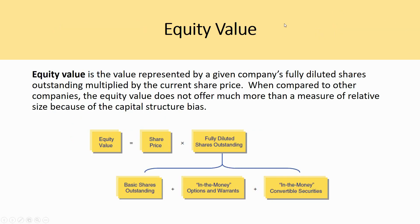Equity value is the value represented by a given company's fully diluted shares outstanding multiplied by the current share price. When compared to other companies, equity value does not offer much more than a measure of relative size because of the capital structure bias. So equity value equals share price times fully diluted shares. Importantly, it's not basic shares outstanding — it's fully diluted shares, meaning basic shares outstanding plus in-the-money options and warrants plus in-the-money convertible securities.